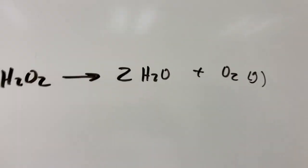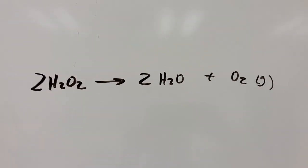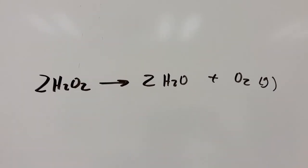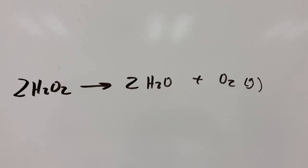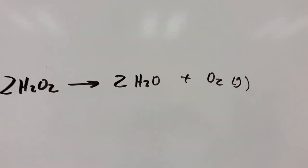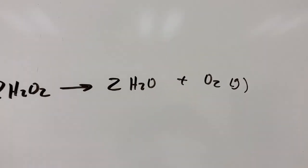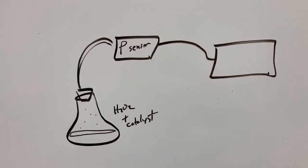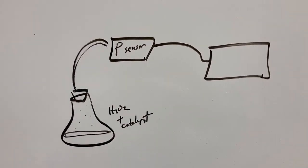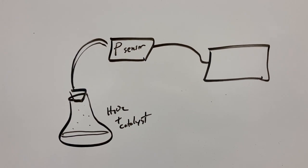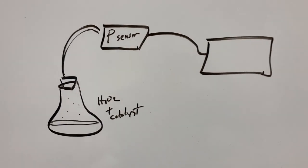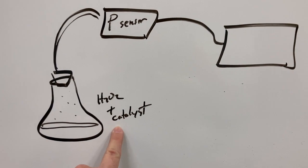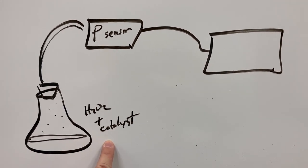If we look at the decomposition of hydrogen peroxide, we note that we start with hydrogen peroxide itself. It decomposes to form water and oxygen gas. Because gas is the product here, we can monitor the accumulation of the product using a pressure sensor. So we're going to start with a flask with the hydrogen peroxide, and we're going to add a catalyst — sodium iodide.